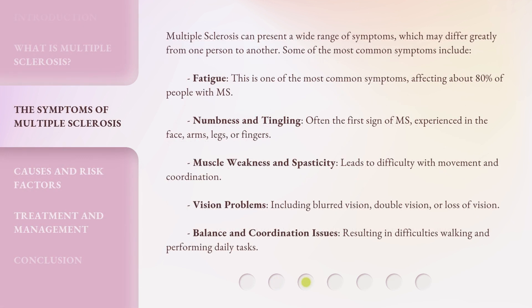Multiple sclerosis can present a wide range of symptoms, which may differ greatly from one person to another. Some of the most common symptoms include fatigue, which is one of the most common symptoms, affecting about 80% of people with MS. Numbness and tingling, often the first sign of MS, experienced in the face, arms, legs, or fingers. Muscle weakness and spasticity leads to difficulty with movement and coordination.